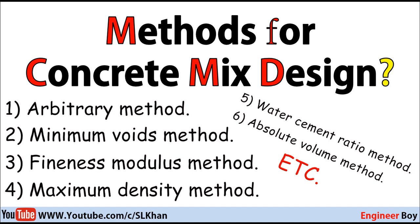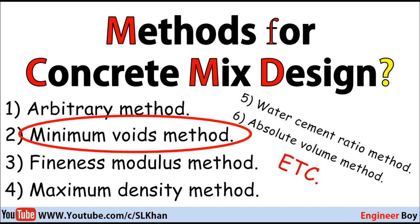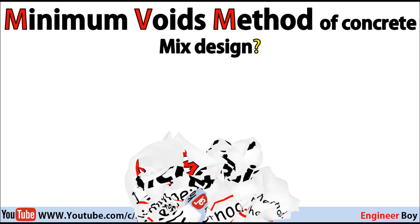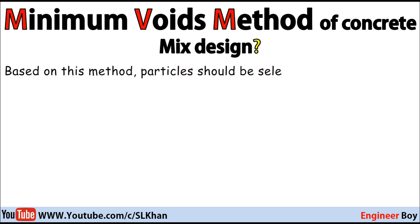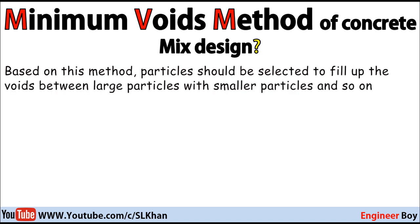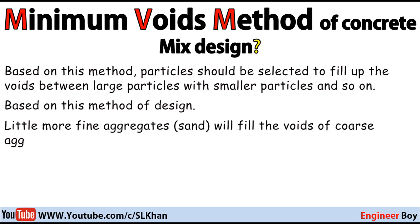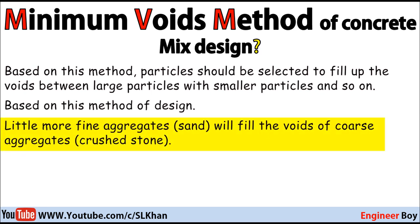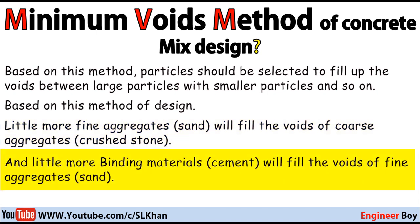This time my approach is the minimum voids method, so let's talk about the minimum voids method. Based on this method, particles should be selected to fill up the voids between large particles with smaller particles. So fine aggregates will fill the voids of coarse aggregate, and a little more binding material or cement will fill the voids of fine aggregates, which is sand.